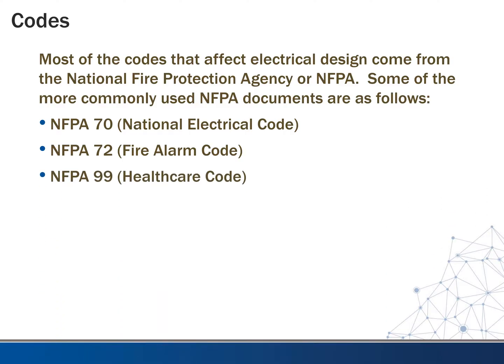If you do any work with healthcare, NFPA 99 is considered the healthcare code, and it embraces more than just electrical — it covers all trades, much like NFPA 101, which is the Life Safety Code. That has to do with anything involved with getting people safely out of a building. For electrical, it would have to do with egress lighting and some fire alarm constraints, especially in view of the egress paths.